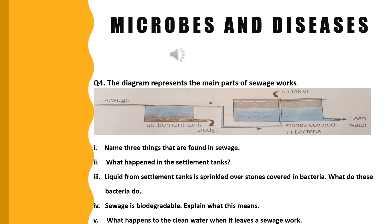You can add more examples to complete your answer. The next question is: What happens to the clean water when it leaves a sewage works? The treated waste water is released into local water sources where it can be used again for a number of purposes, such as drinking water,